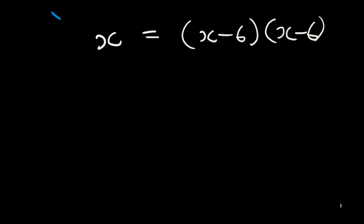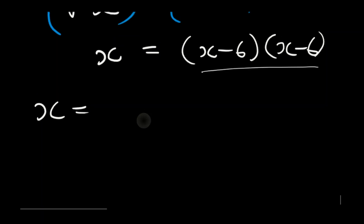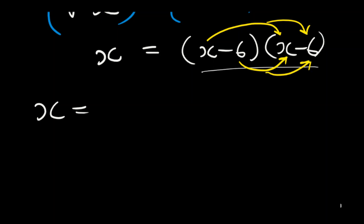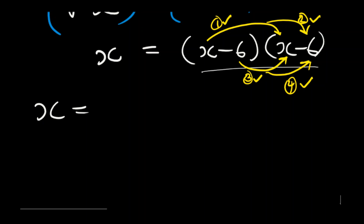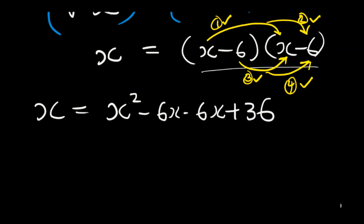To find the product, label the terms: position 1 is x times x, position 2 is x times −6, position 3 is −6 times x, and position 4 is −6 times −6. This gives x squared minus 6x minus 6x plus 36.